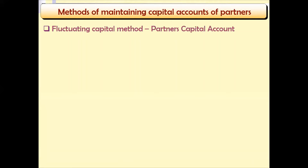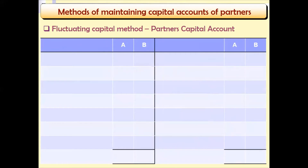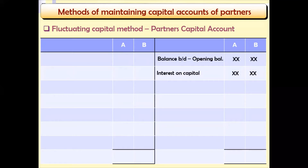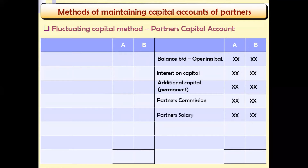In the fluctuating capital method, only one account is prepared, called the Partner's Capital Account — or fluctuating capital account. In this account, the opening balance is the first item, followed by interest on capital, additional capital, partner's commission, partner's salaries, share of profit, and interest on partner's loans.